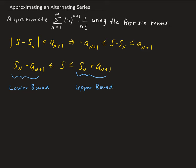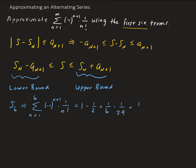We want to approximate the series using the first six terms, so let's calculate S₆. This is equal to the summation going from one to six. Starting with n=1 we get 1; with n=2 we get minus one half; with n=3 we get one sixth; n=4 gives minus one over 24; n=5 gives one over 120; and the sixth term gives minus one over 720. This is all equal to 91 over 144.